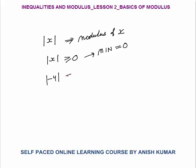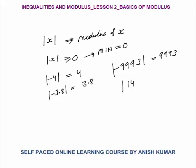For example, modulus of minus 4 equals 4 — the output is always greater than or equal to zero. Modulus of minus 3.8 equals 3.8. Anything negative becomes positive once you apply the modulus. Modulus of minus 9993 equals 9993. Anything positive, like 143, remains positive. Modulus does not change the magnitude; it only changes the sign — a negative sign becomes positive.